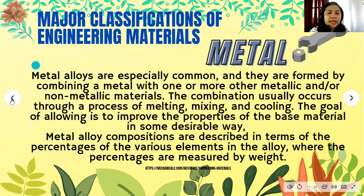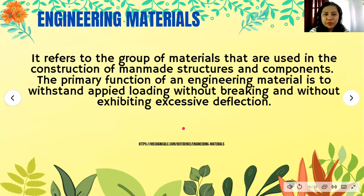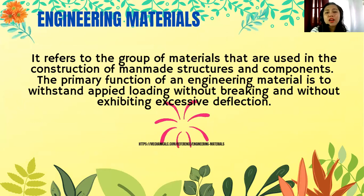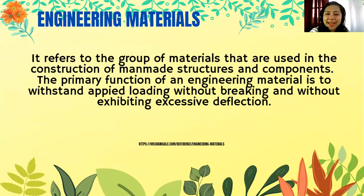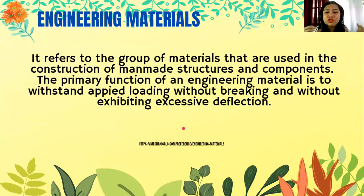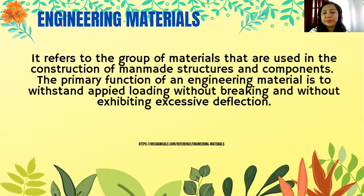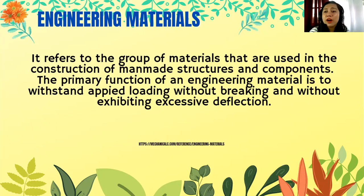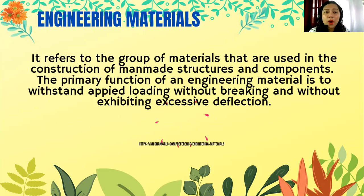When it comes to engineering materials, it refers to the group of materials used in the construction of man-made structures and components. The primary function of an engineering material is to withstand applied loading without breaking and without exhibiting excessive deflection. That's why it's really important to study the structures and components of materials here in mechanical engineering, especially for heavy equipment.